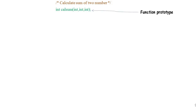This is the function prototype. In a function prototype, we are just defining the prototype of a particular function — that means: what is the name of the function, is it returning some value and what kind, and does it need any arguments. Here you can see the function name is `cal_sum`, it requires three arguments of integer type, and it returns an integer value.